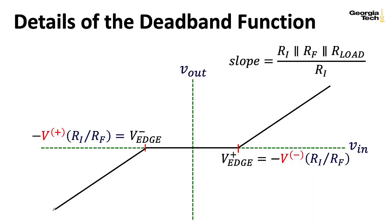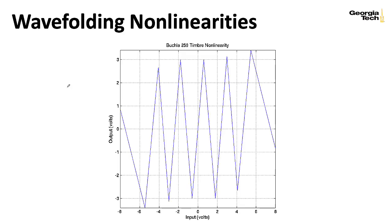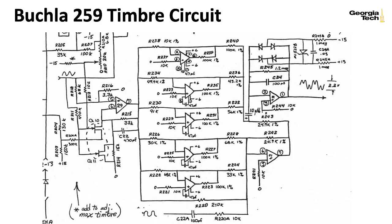Anyway, we've looked at a deadband generating circuit, but I told you we were going to make nonlinearities that look like this. Well, what Don did is he took a bunch of these deadband circuits, and he ran them in parallel, and then he alternately added and subtracted the outputs of these different deadbands with the deadband edges set to different points. And that is what we're going to look at next time.